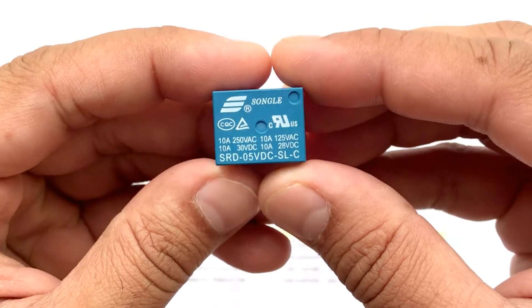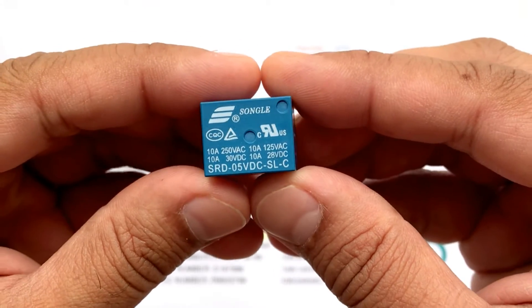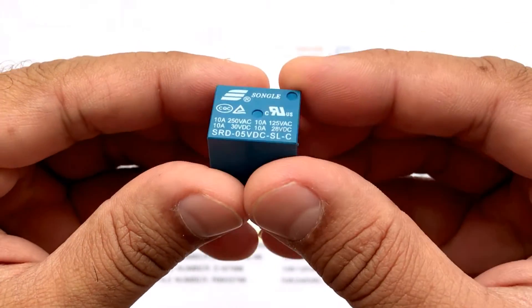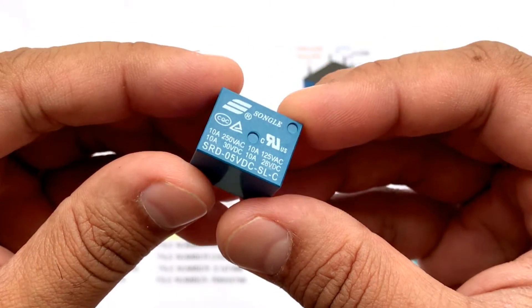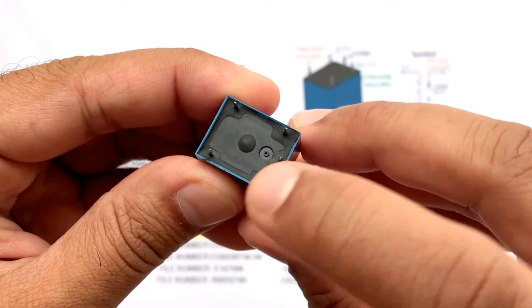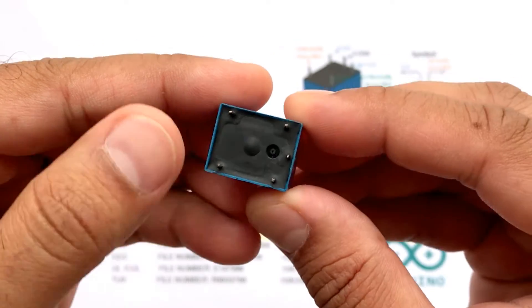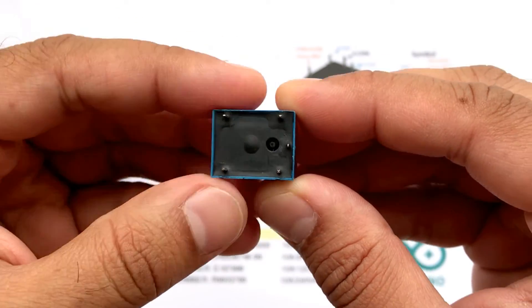The relay I am looking at is an SRD 5V DC SLC. It is a very popular relay amongst Arduino and DIY electronic hobbyists. This relay has five pins: two for the coil, the middle one is called common, and the rest are called normally open and normally closed.